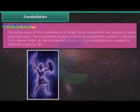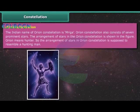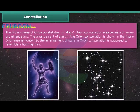Orion Constellation. The Indian name of Orion Constellation is Mriga. Orion Constellation also consists of seven prominent stars. The arrangement of stars in the Orion Constellation is shown in the figure. Orion means hunter. So the arrangement of stars in Orion Constellation is supposed to resemble a hunting man.